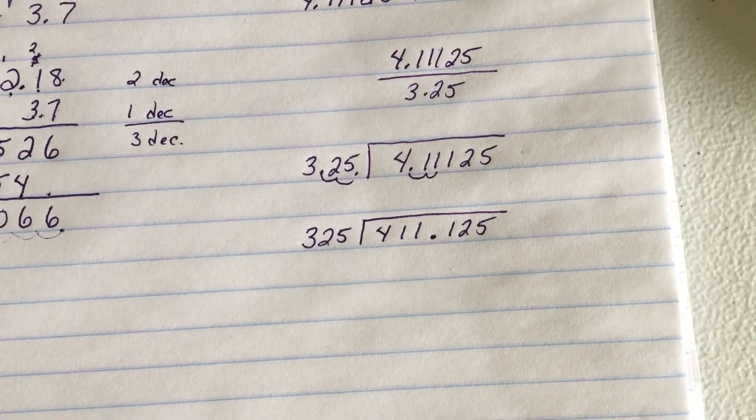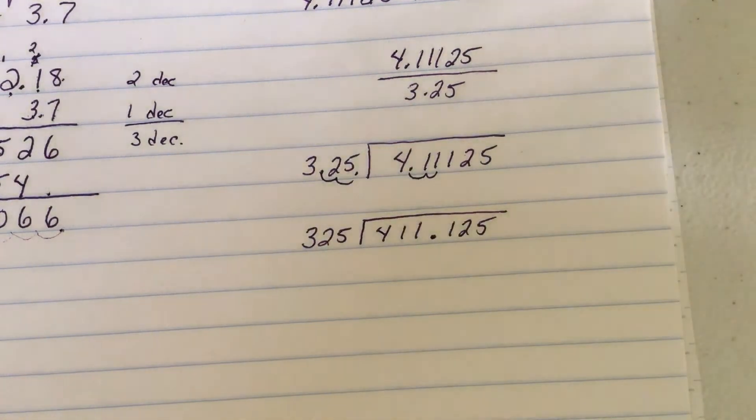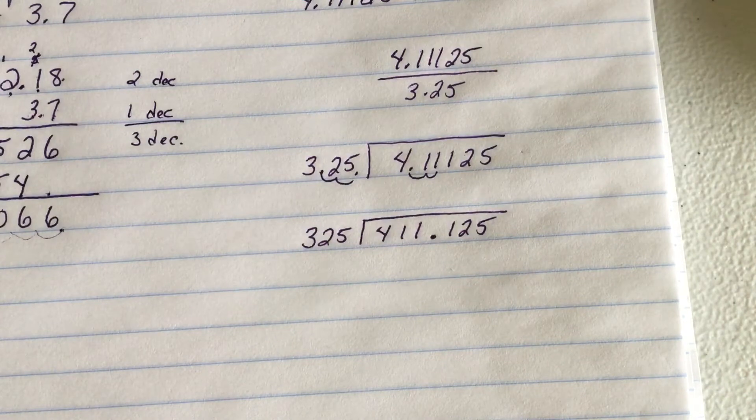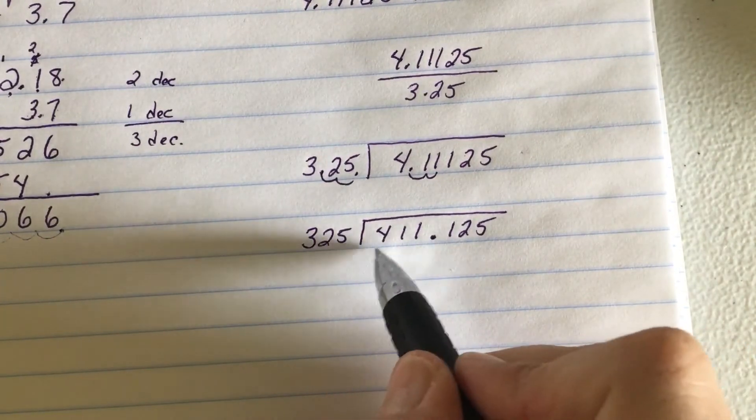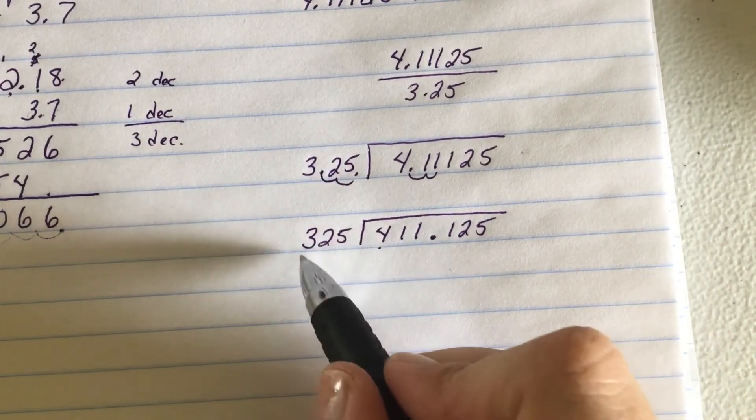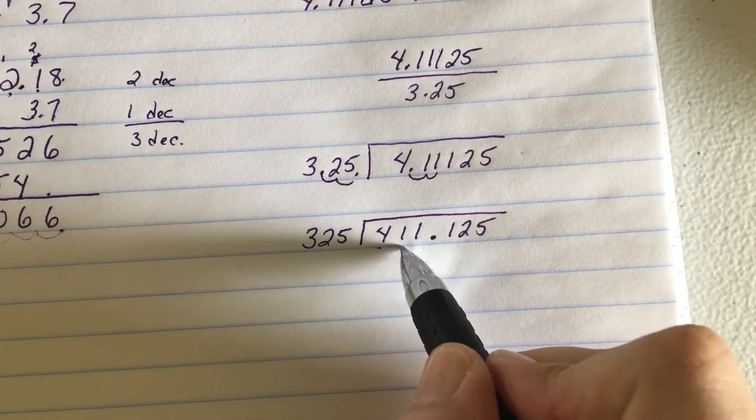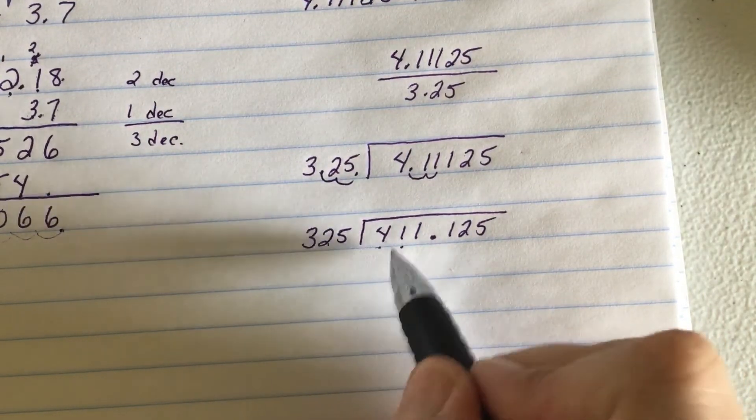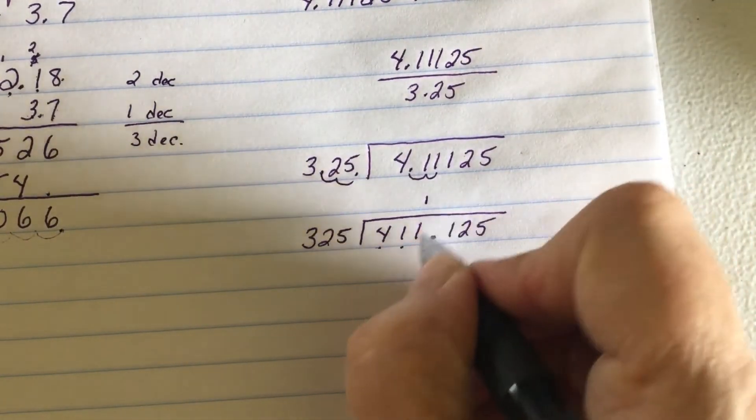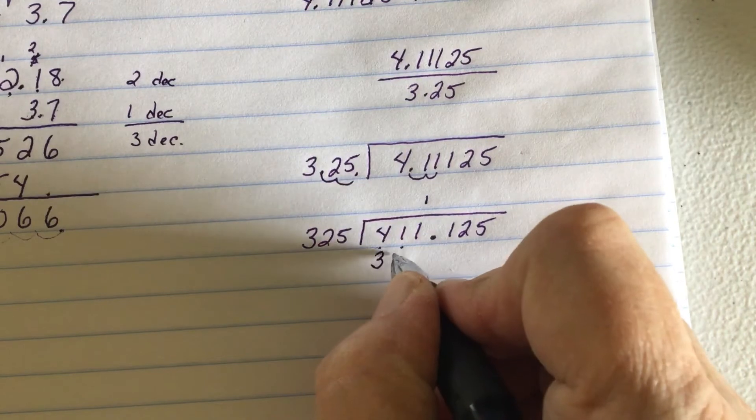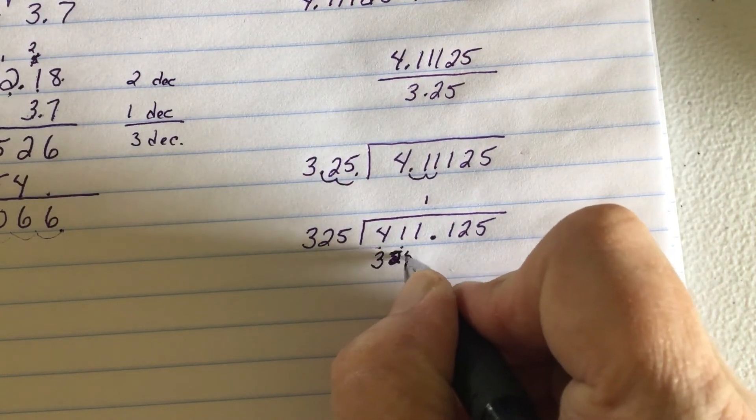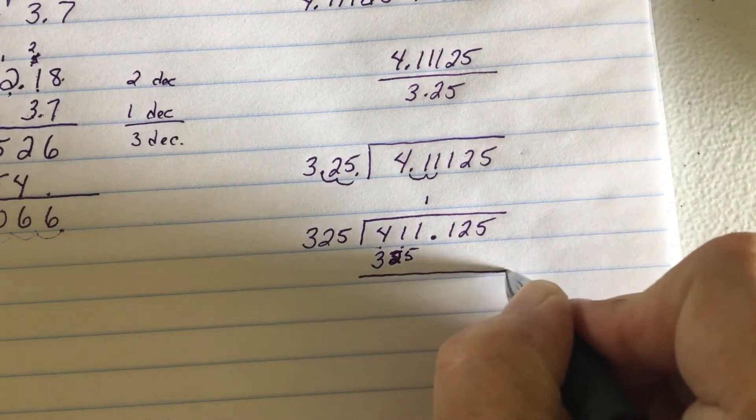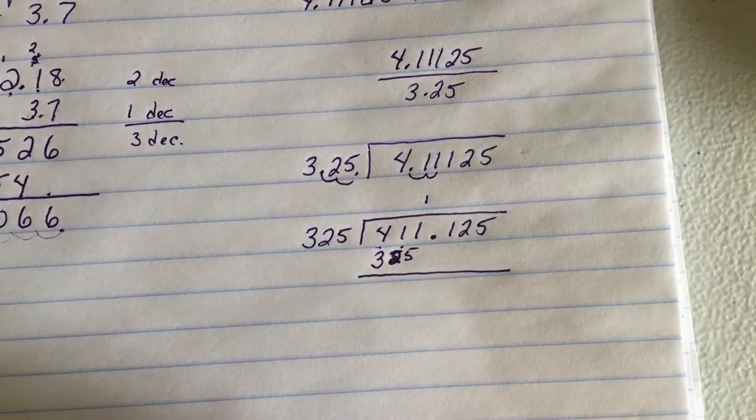Alright, so now we start our division. And don't feel bad if you have to do a little bit of side multiplication, most students do. So 325 goes into 4, doesn't. 325 goes into 41, nope, doesn't. 325 goes into 411, yes, one time. So that's where I start. I subtract again, remember, I sometimes have to borrow, like in this case, I have to borrow.